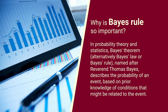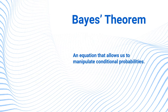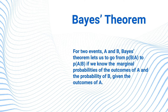In probability theory and statistics, Bayes' theorem — alternatively Bayes' law or Bayes' rule — is named after Reverend Thomas Bayes and describes the probability of an event based on prior knowledge of conditions that might be related to the event. For example, if the risk of developing health problems is known to increase with age, Bayes' theorem allows the risk to an individual of a known age to be assessed more accurately by conditioning on age, rather than simply assuming the individual is typical of the population. The equation allows us to manipulate conditional probabilities for two events A and B, going from P(B|A) to P(A|B).